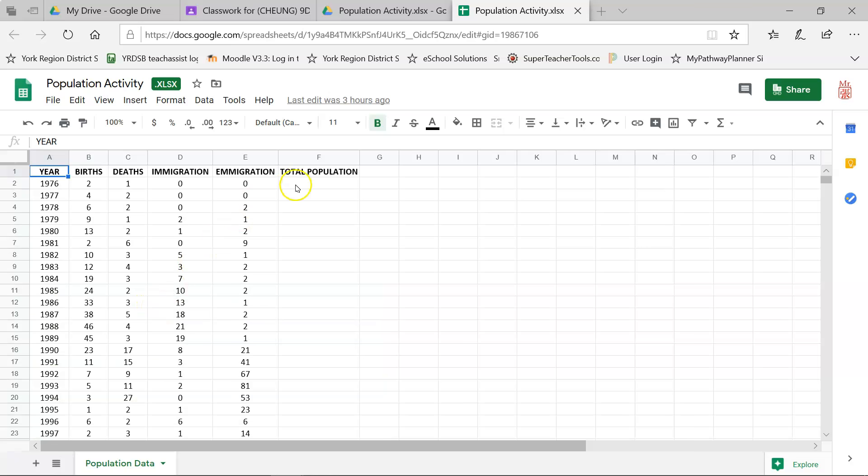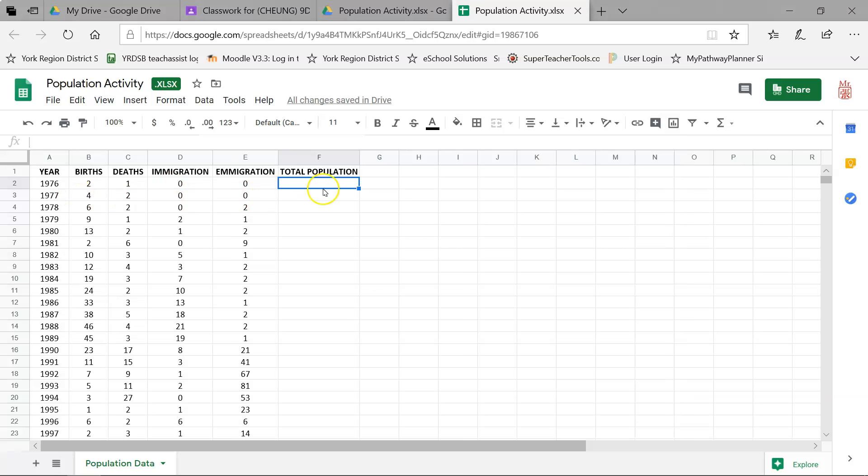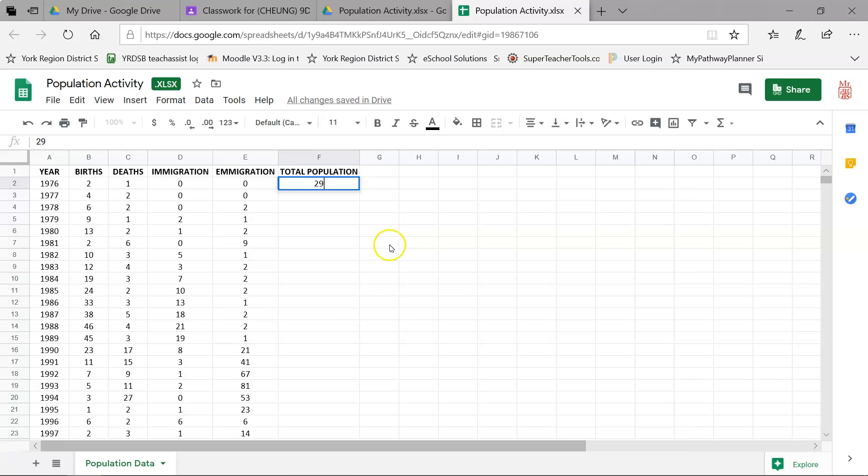So looking back at the instructions, it says that at the end of 1975, we had 28 reindeer. So going over here, so I'm going to open up my calculator and type in 28 reindeer to start off with. Since I have two births in 1976 and births add to my population, I'm going to say plus two. And I had one death, so I'm going to go minus one death removed from your population. I had zero immigration, but immigration usually adds to your population, so plus zero. Emigration means they're leaving your area, so I'm going to say minus zero. And that means at the end of 1976, I should have 29 reindeer.